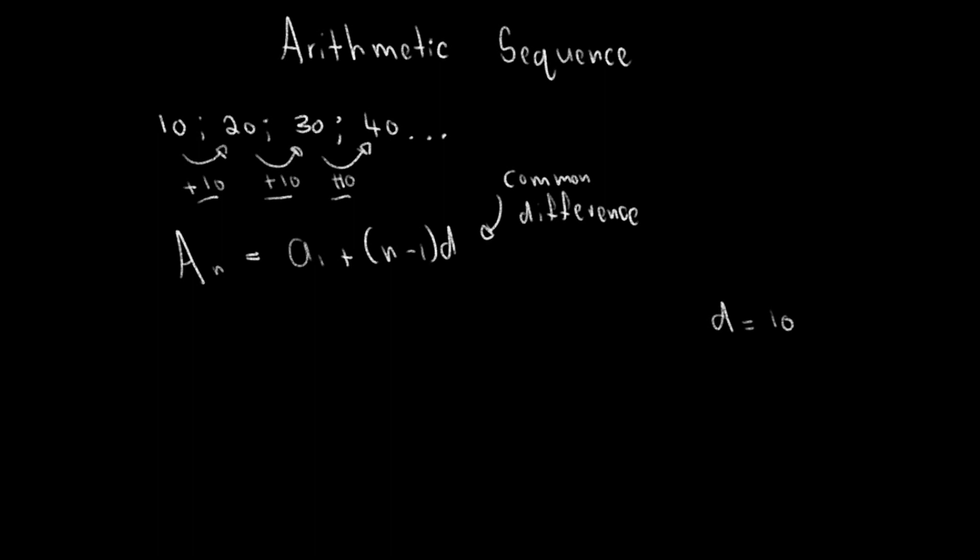Well what about this a_1? This a_1 would be considered the first term of the sequence. We can look at the sequence by where did the sequence start. Well, the sequence started by 10, so that would be a_1. Now we can continue this pattern by looking at the second term.